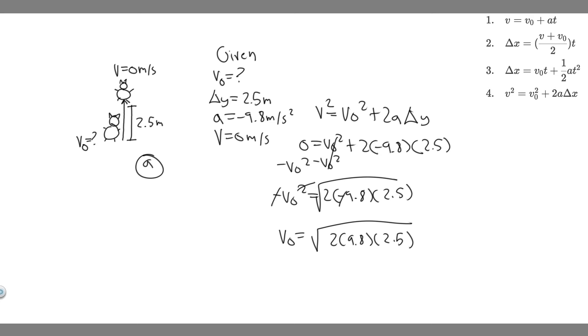So the square root of 2 times 9.8 times 2.5. And when you do this, what you're going to get is 7. So v sub 0 is 7 meters per second. That's going to be its initial velocity, the vertical speed when it leaves the ground, or your answer to A. So this is A.